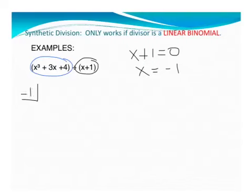Now, my numbers are going to be 1 for the x cubed, 0 for my x squared, 3 for my x, and then 4 is the constant.